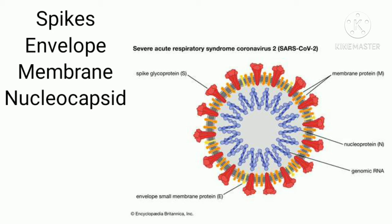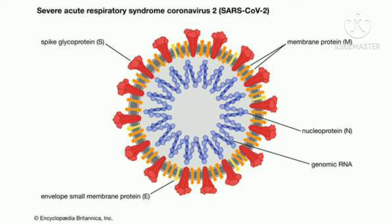These different proteins play an important role in viral infection and pathogenesis. As seen in the diagram, there are spike or S proteins, M proteins or membrane proteins, envelope proteins, genomic RNA which is single-stranded, the lipid bilayer, and nucleocapsids.